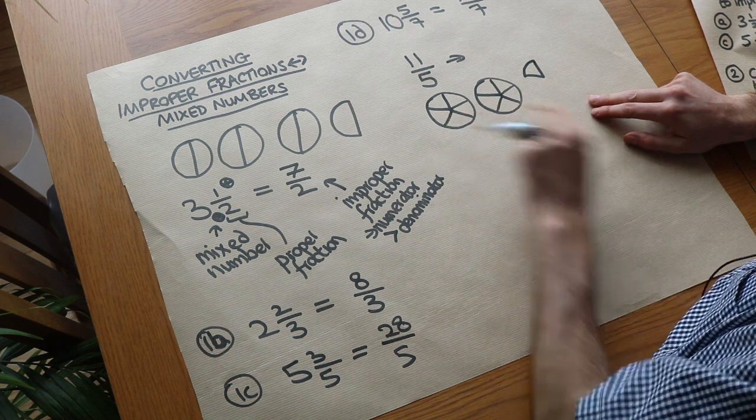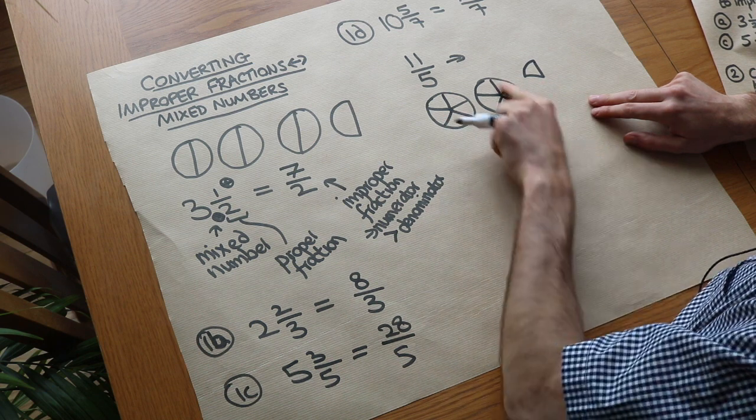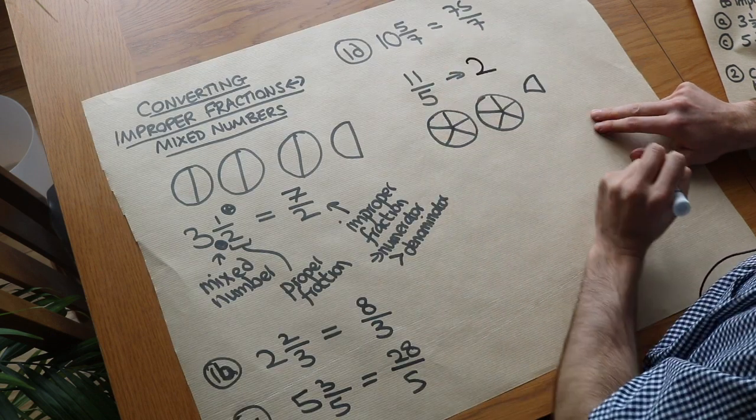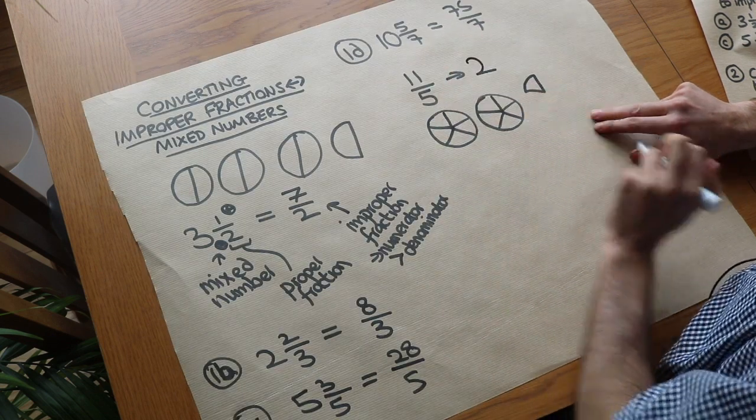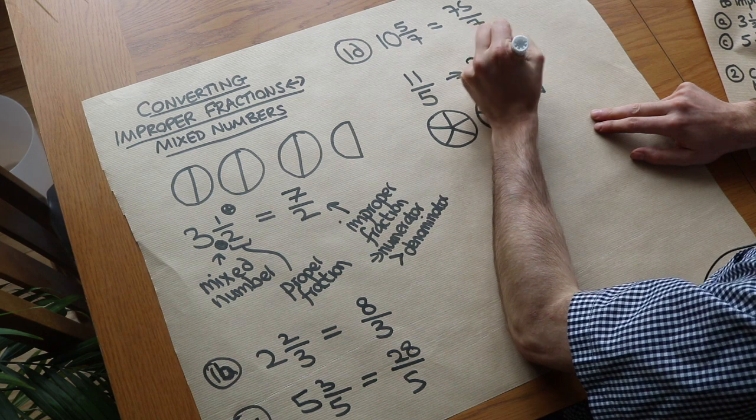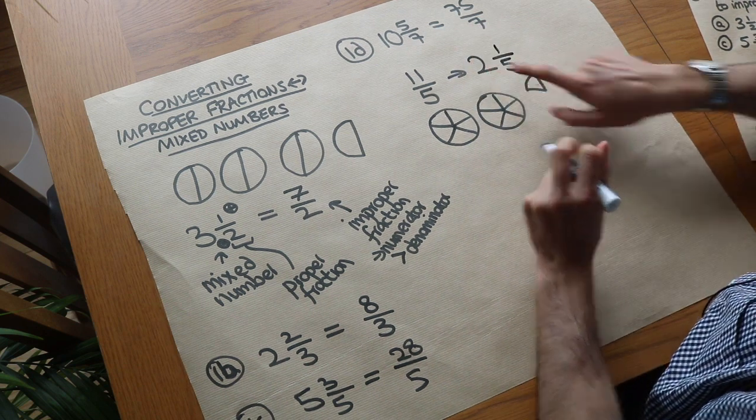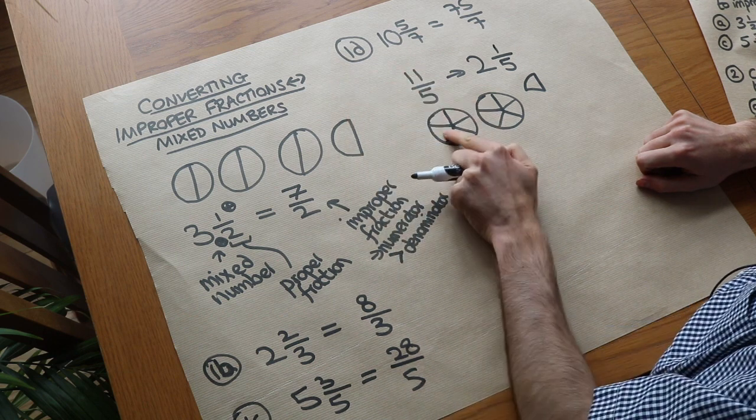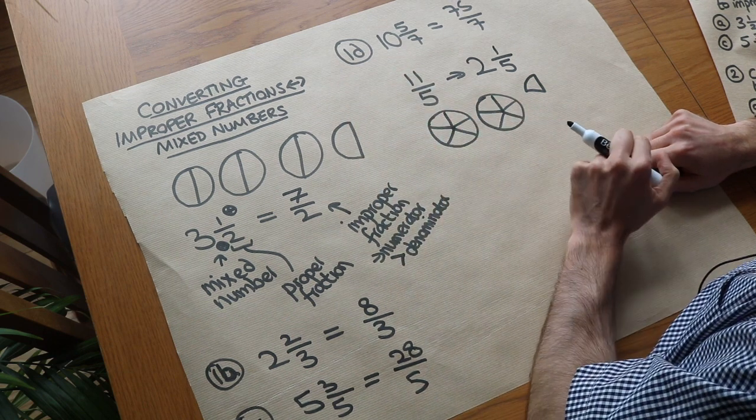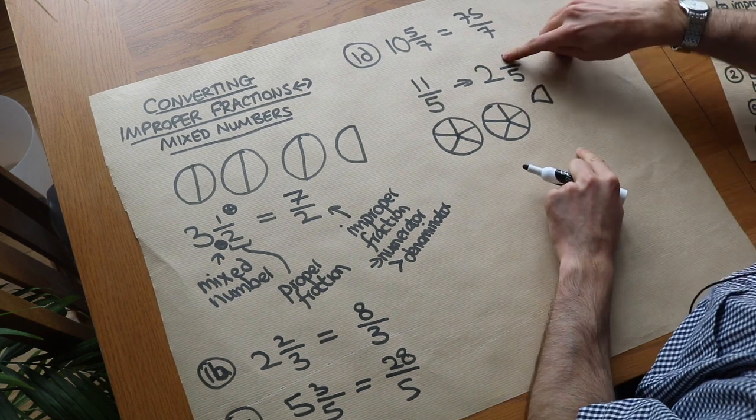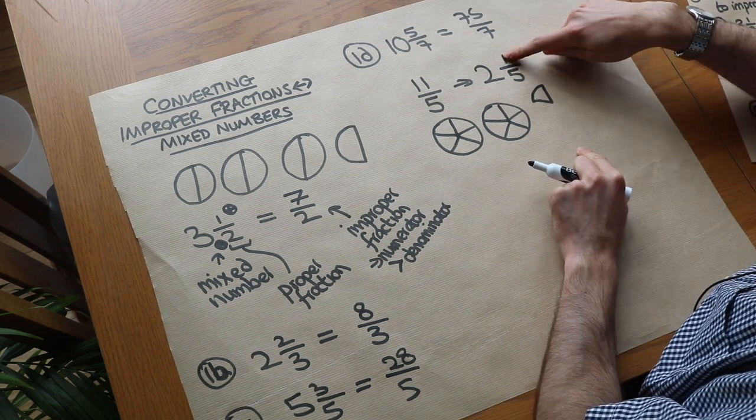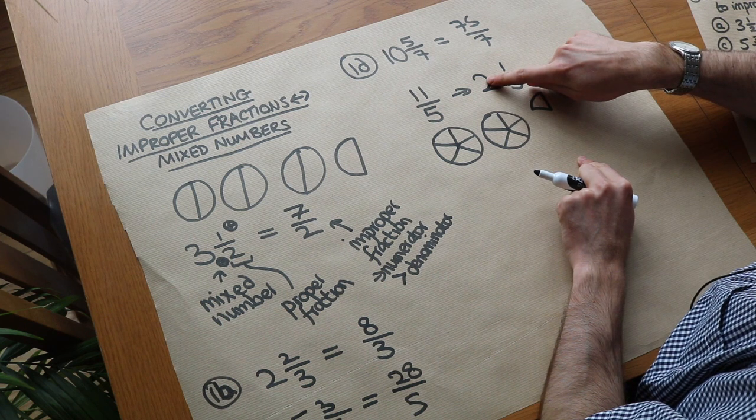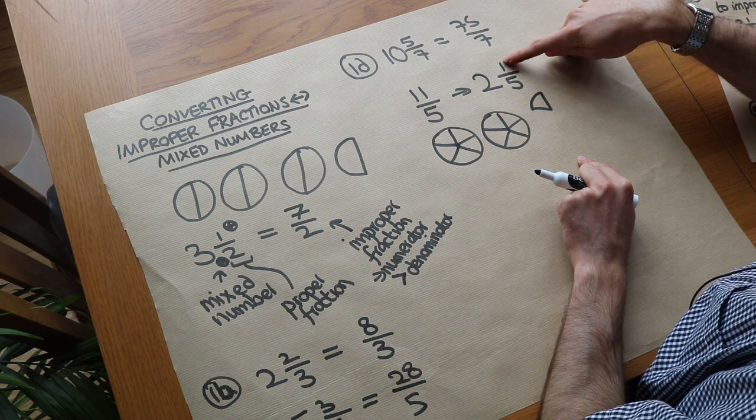Now how could we write that as a mixed number? Well we can see the 10-fifths of a pizza made two whole pizzas. So we had two whole pizzas and then we had a further fifth, so it'd be one-fifth. And the way we got that two is we worked out how many times did five go into 11, because that tells us how many full pizzas I can make. And then that one there was basically the remainder. When we divided 11 by five, that was the whole number of times five went into 11 and the one was the remainder.